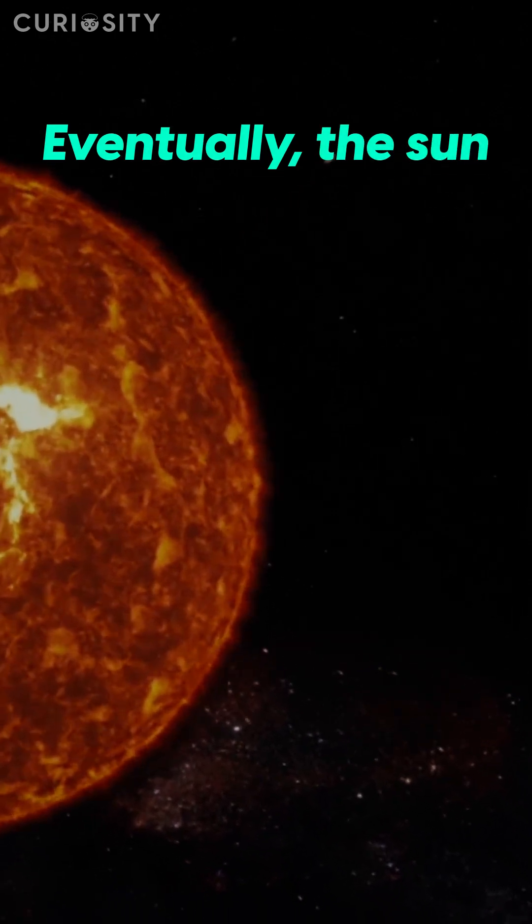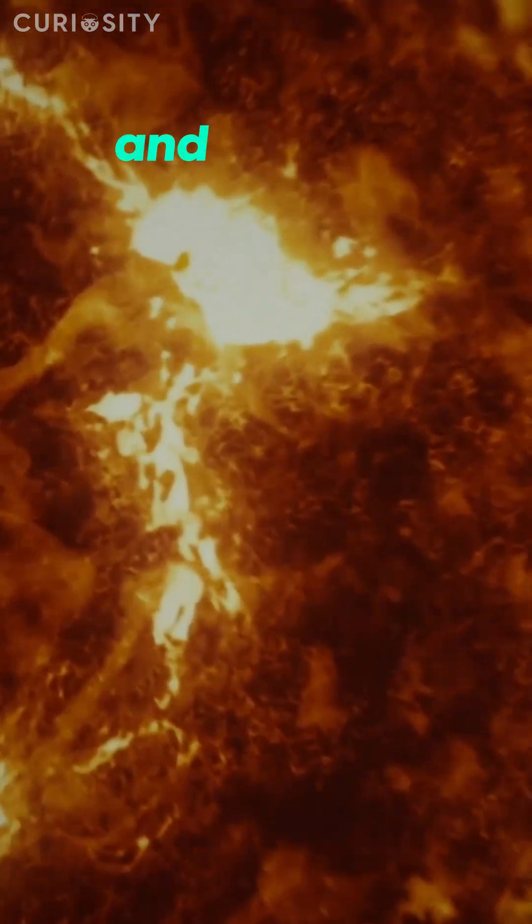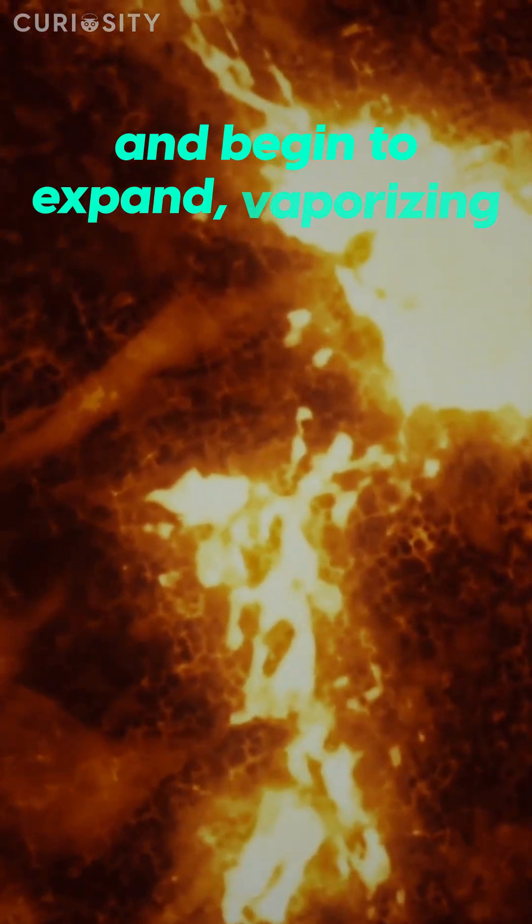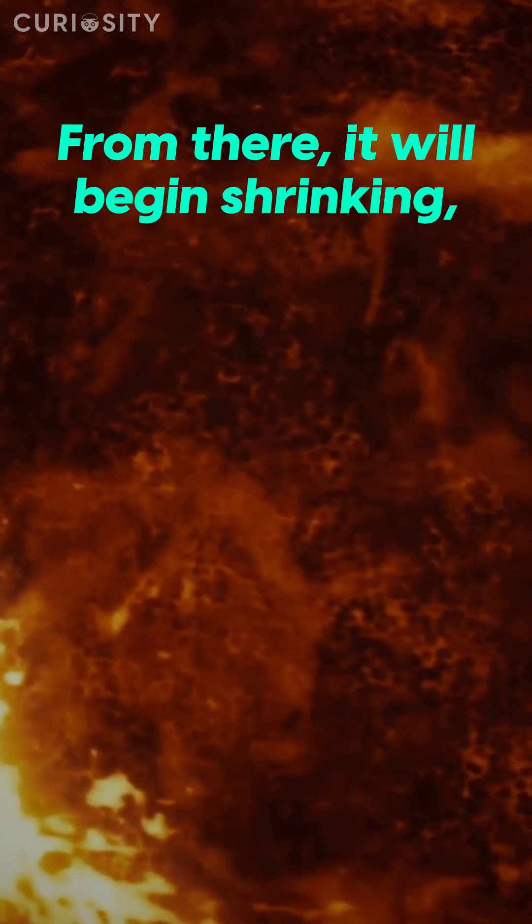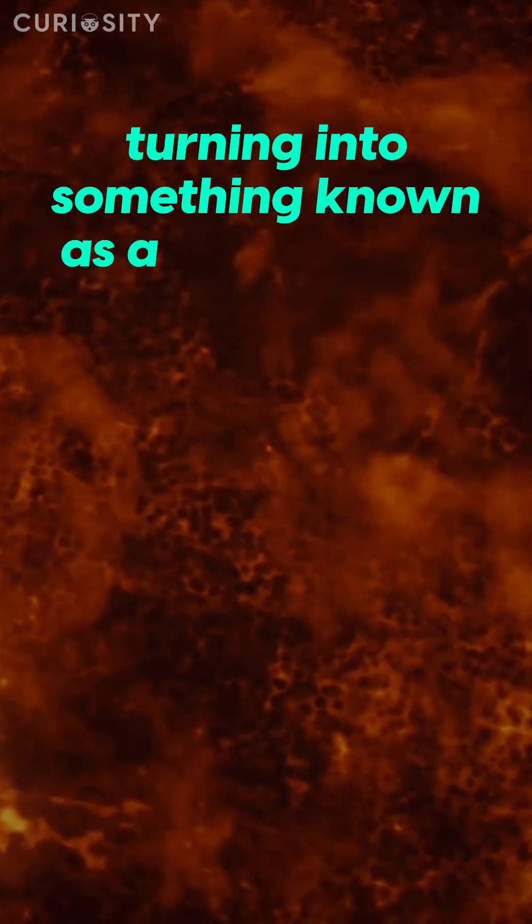Eventually, the Sun will run out of hydrogen and begin to expand, vaporizing Earth. This is what is known as a red giant. From there, it will begin shrinking, turning into something known as a white dwarf.